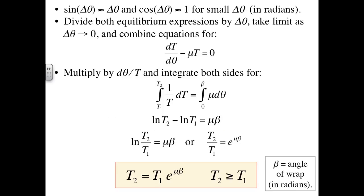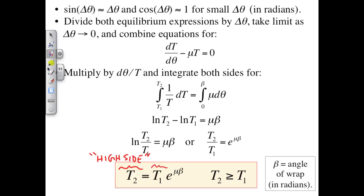This separable differential equation can be integrated to give the result T2 equals T1 times e to the mu beta. In this expression, T2 is the high side tension and T1 is the low side tension. Within the exponential factor, beta is the contact angle measured in radians. Note that the exponential factor is always greater than or equal to 1. In the limit of a frictionless condition, the exponential argument becomes 0 and we get back to T2 equals T1.